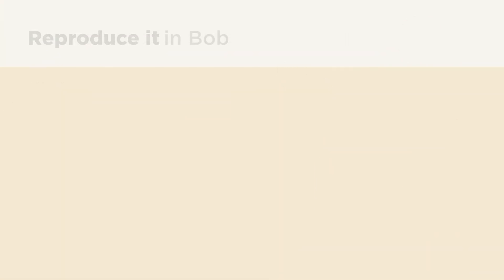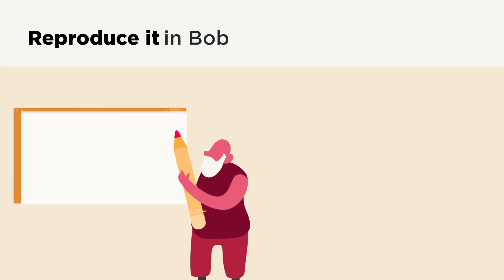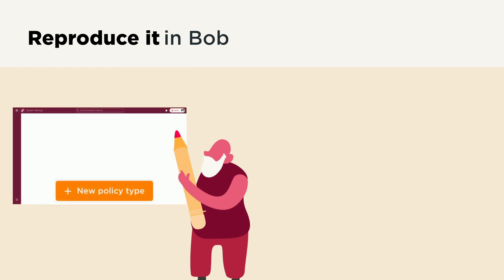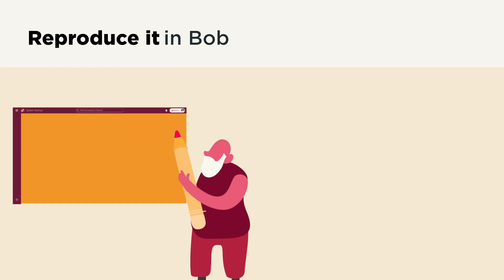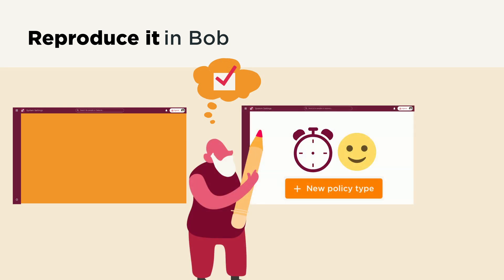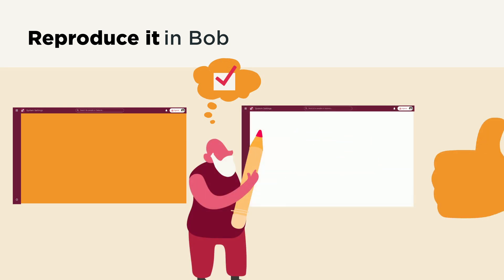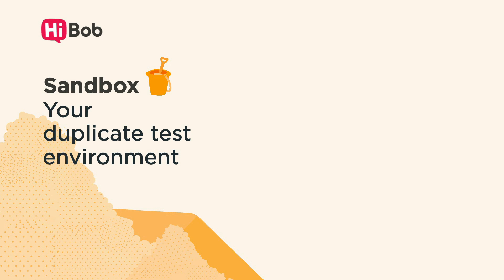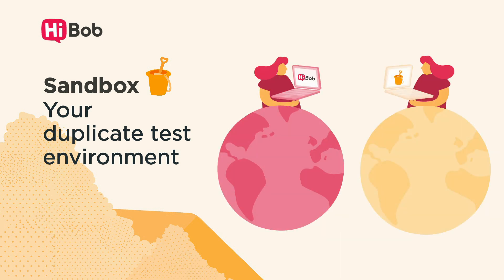Reproduce it in BOP. Once you've made changes in Sandbox, such as setting up a new time off policy, you can easily use it as a reference and reproduce the same actions in BOP. The possibilities are endless. With Sandbox, your duplicate world is just a click away.